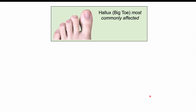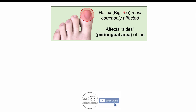The clinical features of an ingrown toenail: if we look at the feet, the hallux or big toe is the most commonly affected toe. It affects the sides of the toe — the periungual area — as spicules or sharp pieces of nail grow into the sides of the toe.